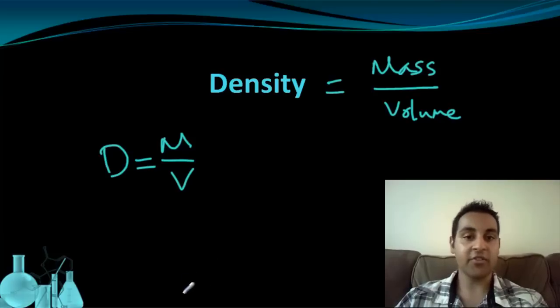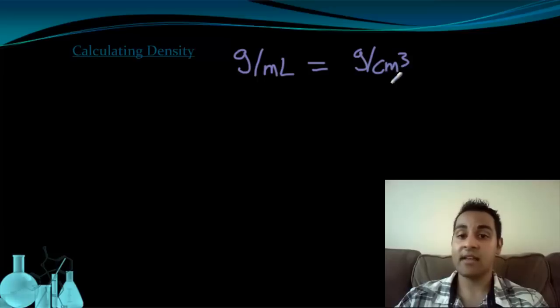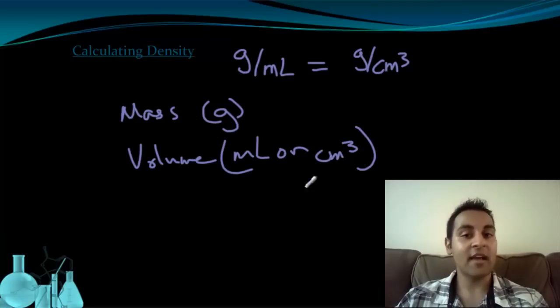So let's look at how we can calculate density. The first thing is that the units of density are typically going to be in grams per milliliter or grams per centimeter cubed. These are equivalent units, because a milliliter is exactly the same thing as a cubic centimeter. So grams per milliliter or grams per centimeter cubed are going to be the two most common ways we're going to represent density. Basically what this tells us is that we're going to be looking for a mass that's measured in grams, and a volume that's measured in either milliliters or cubic centimeters. This sort of gives us an idea of what to look for so that we can calculate the density of an object.